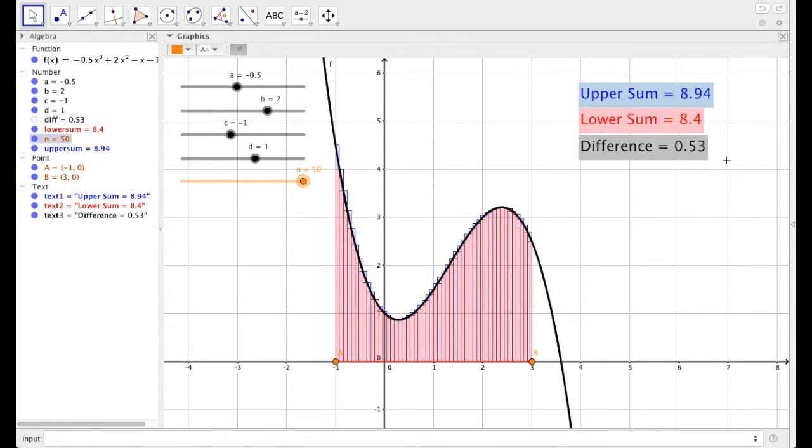Even with 50 rectangles, the difference between these two methods is off by 0.53. Since the upper sum always overestimates, and the lower sum always underestimates, what's something that we could do to sort of kind of help them meet in the middle.